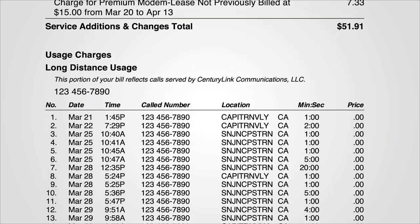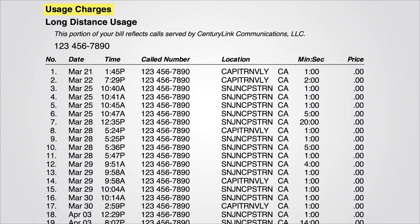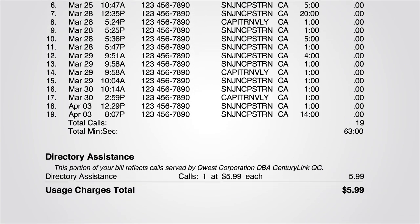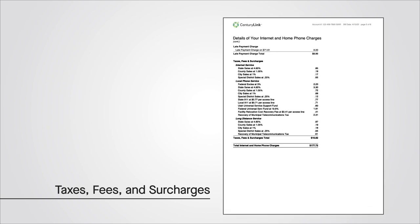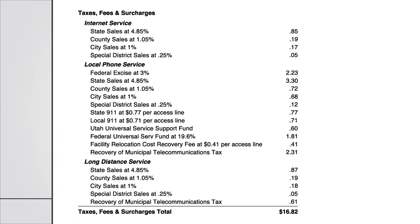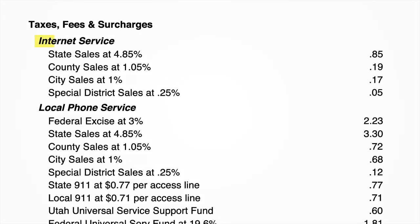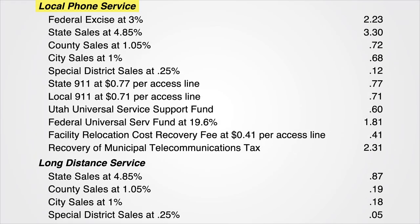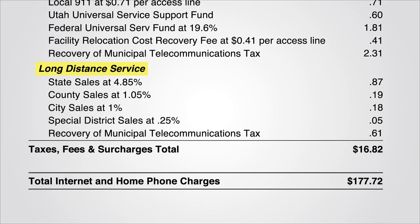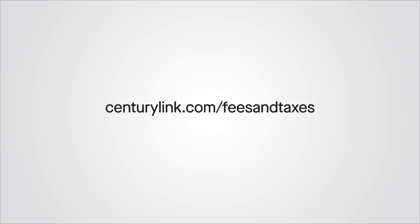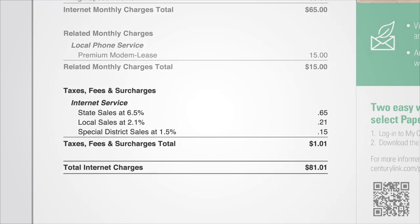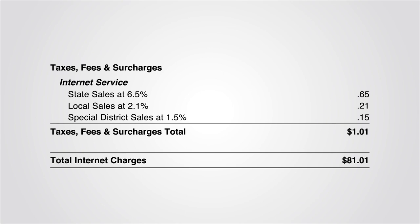Some customers' bills may also have a section called Usage Charges. These charges are items like long-distance phone calls or calls to directory assistance. Taxes, fees, and surcharges is the last section of your bill. For some accounts, this section may be a long, extensive list because home phone products can often carry complex fees driven by local and state government agencies. Each tax and fee is listed separately for each service in your area. For more information about any of these fees, visit CenturyLink dot com slash fees and taxes and search for the tax or fee by name. For accounts where the customer only has internet service, the taxes, fees, and surcharges section is rather simple.